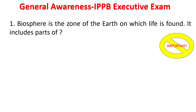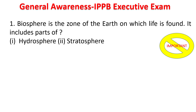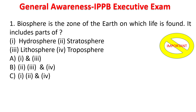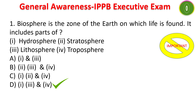Biosphere is the zone of earth on which life is found. It includes parts of the hydrosphere, stratosphere, lithosphere, and troposphere. You should identify which of these are included in the biosphere. The answer is biosphere includes hydrosphere, lithosphere, and troposphere — except the stratosphere, all three are included in the biosphere.